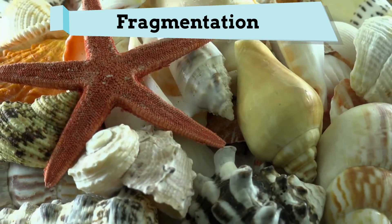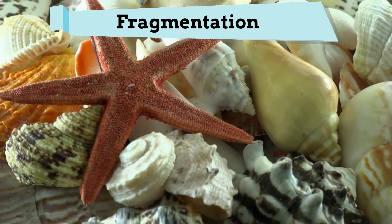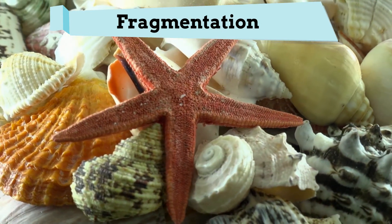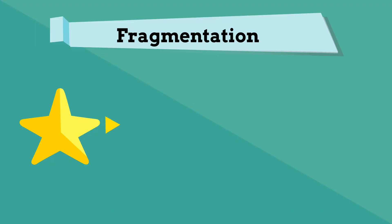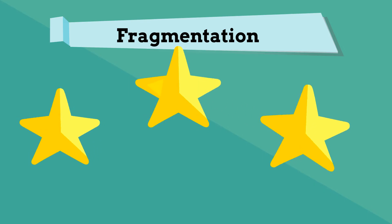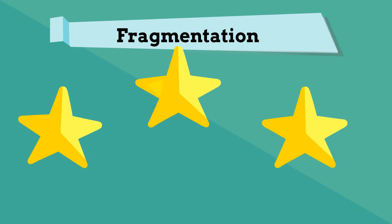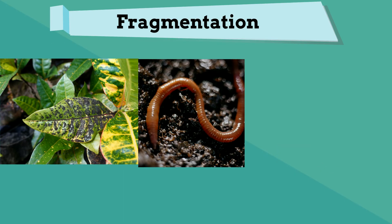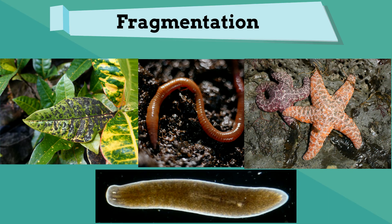Fragmentation is a form of cloning where an organism is split into fragments. The splitting may or may not be intentional. Each of these fragments develops into a mature, fully grown individual that is a clone of the original organism. If the organism is split any further, the process is repeated. Fragmentation is seen in many organisms such as molds, worms, starfish, and planarian.